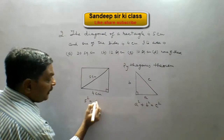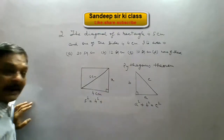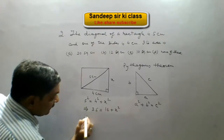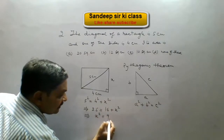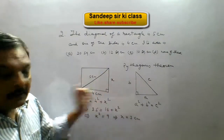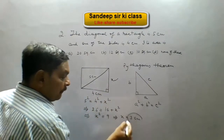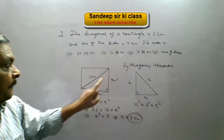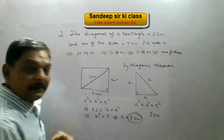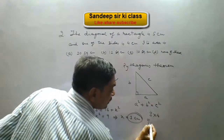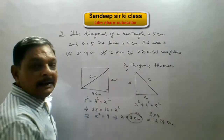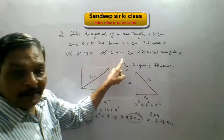Applying the theorem: 5² equals 4² plus x², where x is the unknown side. This gives 25 equals 16 plus x², so x² equals 25 minus 16, which is 9, and hence x equals 3 centimeters. With both sides known — 3 centimeters and 4 centimeters — the area of the rectangle is 3 × 4 equals 12 square centimeters. Therefore option B is correct.